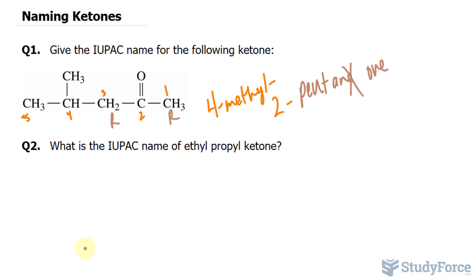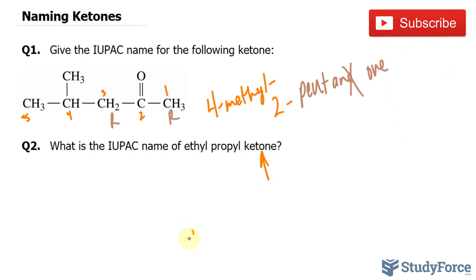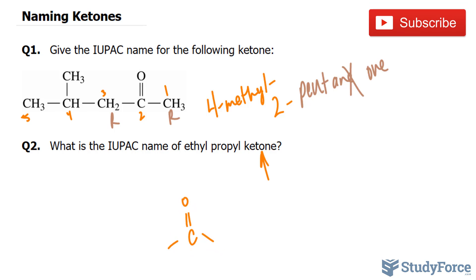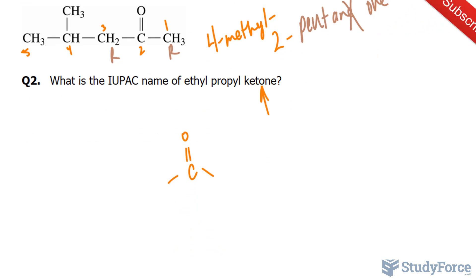In question number 2, we have a common name — ethylpropylketone — and we want to convert that into an IUPAC name. We're told that it's a ketone and we know what ketones look like, so we know it will have a carbonyl group at some point in the molecule.